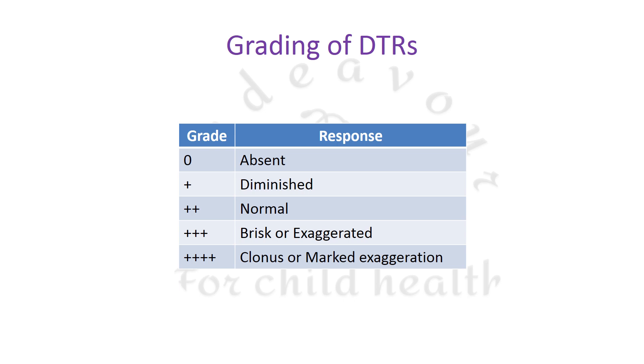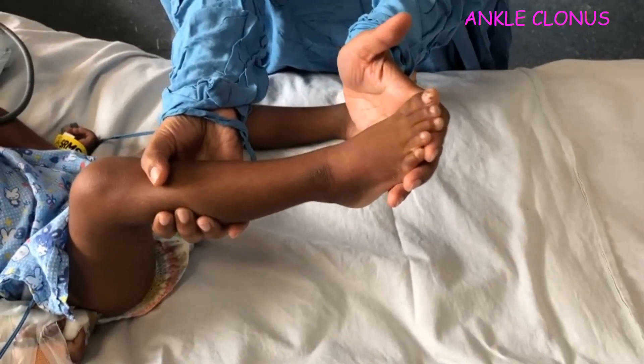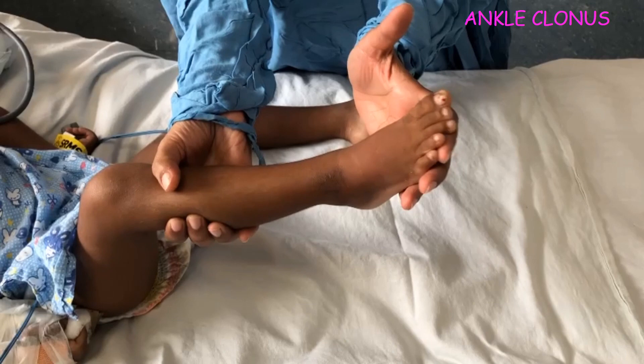Clonus is a series of alternating contractions which, if sustained, suggest a marked degree of reflex hyperexcitability. To elicit ankle clonus, the child should lie supine with hips relaxed and flexed, and the knees and ankle flexed at 90 degrees to each other. Grasp the foot from the plantar surface and quickly dorsiflex it. In this patient, the hyperreflexia was so marked that merely holding the foot in order to position it was sufficient to elicit the clonus.